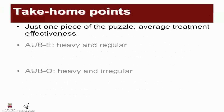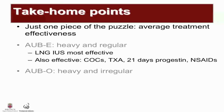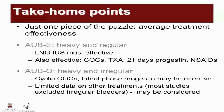Lastly, this is just one piece of the puzzle: average treatment effectiveness. For AUB-E — heavy and regular bleeding — the levonorgestrel intrauterine system is the most effective, but combined oral contraceptives, tranexamic acid, 21 days of progestin, and non-steroidal anti-inflammatories are also effective. For AUB-O — irregular bleeding — cyclic combined oral contraceptives and luteal phase progestins may be effective. There is limited data on other treatments, but given how they work physiologically, they may also be considered.